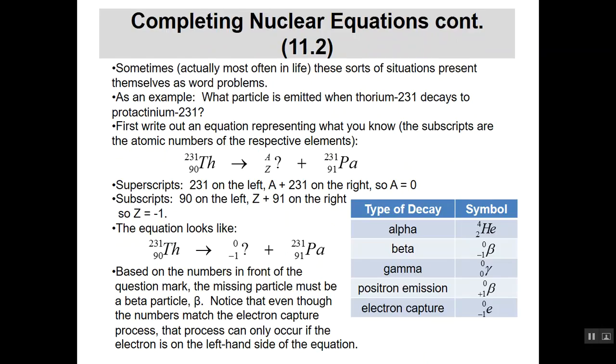A little bit more, just to make sure we kind of get this down, very often these come up in life as sort of word problems. So instead of having an equation looking at it and trying to figure it out, you have to figure it out from the words. So let's look at an example here, what particle is emitted when thorium-231 decays to protactinium-231? Now, 231 is the mass number, that's why they can have the same mass number. They can't have the same atomic number, but they can have the same mass number. So first thing you do is you write the equation representing what you think you know, which is thorium-231 is over there on the left-hand side.